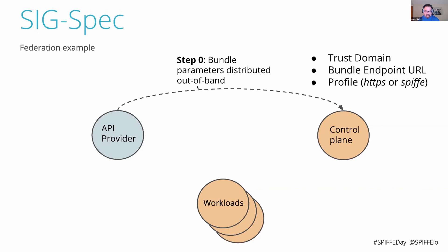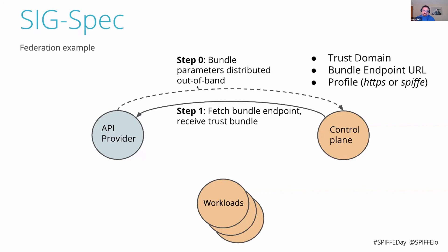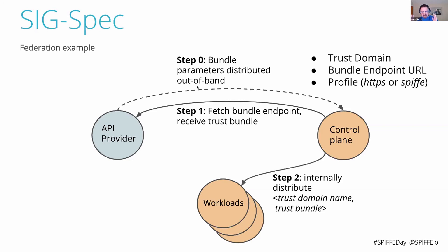If the API provider wants to support federation, it needs to publish its trust bundle at a well-known and stable endpoint location — the bundle endpoint URL. The API provider also specifies which profile it's using: HTTPS or SPIFFE. We do this out of band because there are a wide variety of preferred mechanisms for distributing this initial information. Once the bundle parameters have been distributed, the control plane fetches the bundle endpoint, receiving the API provider's root key material along with hints about how frequently to refresh.